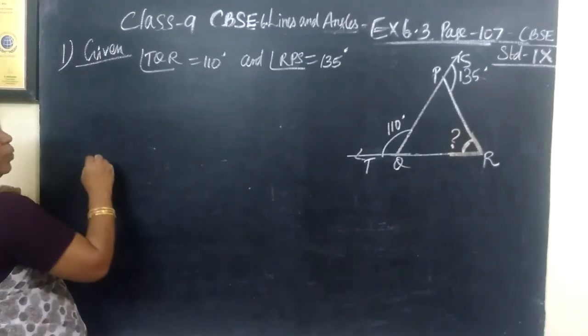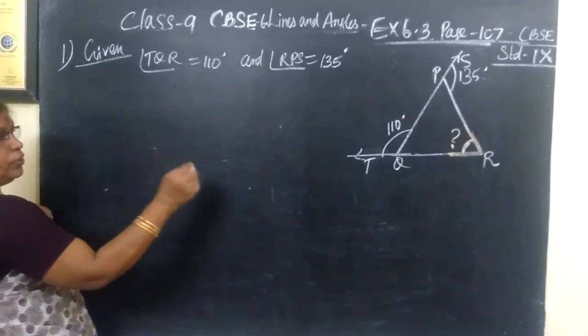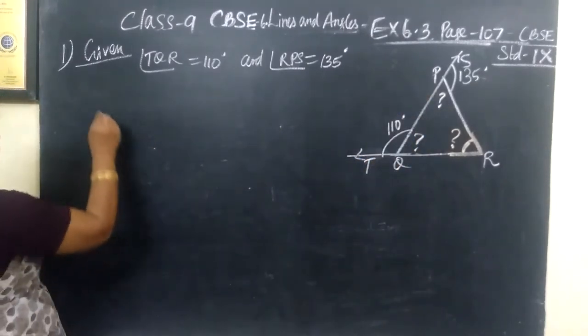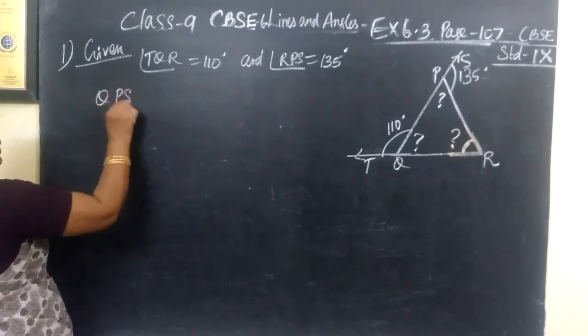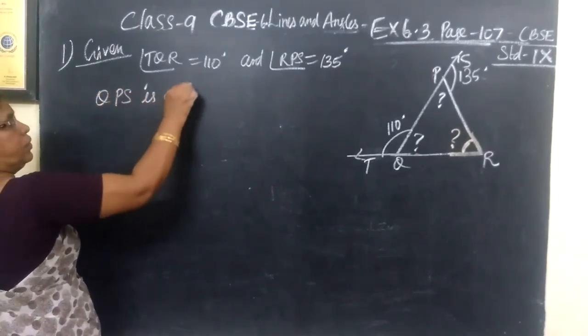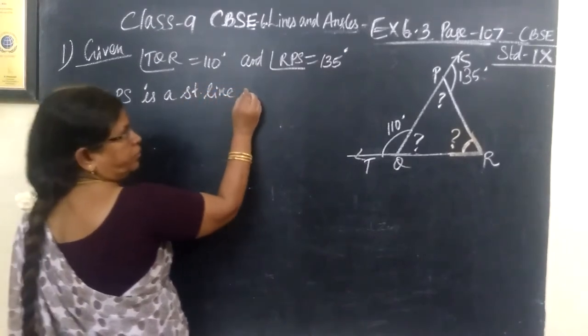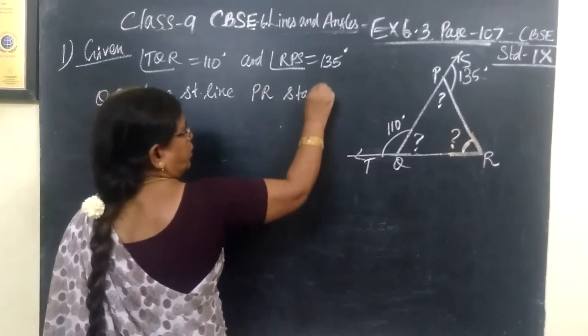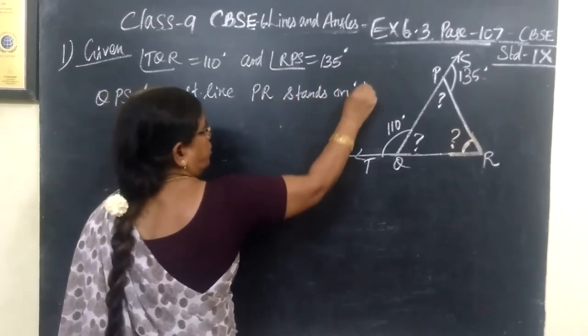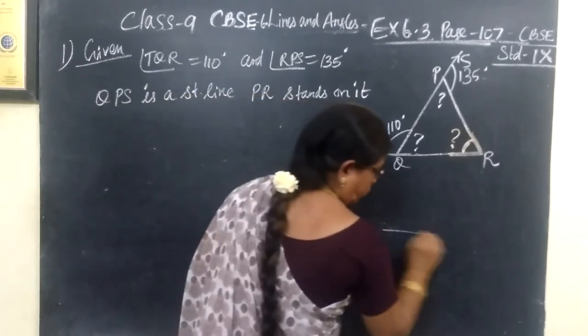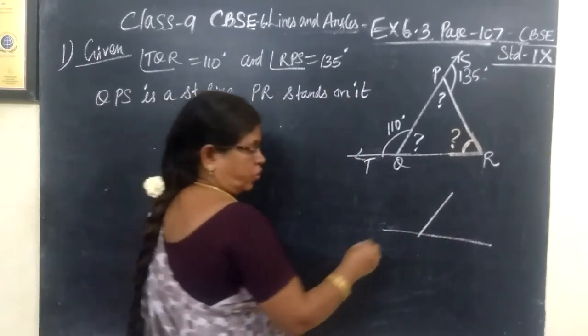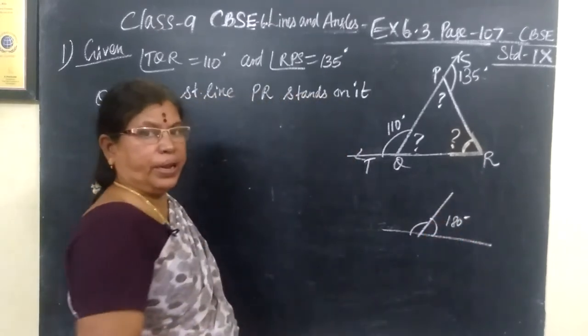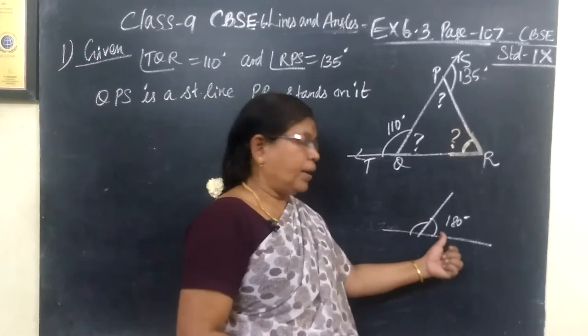You are using the property. Before that, first you must find this angle and this angle. QPS is a straight line. Then what is the ray that stands on it? PR stands on it. You know if it is a straight line and a ray stands on it, then the sum of the adjacent angles is equal to 180 degrees. And we name the pair as linear pair.